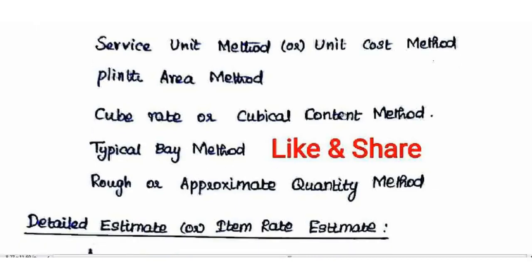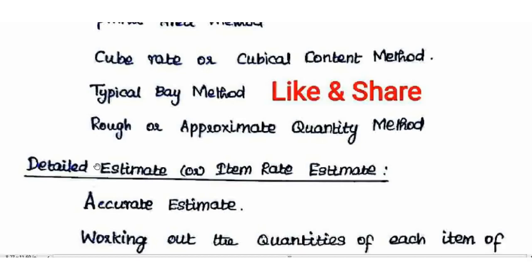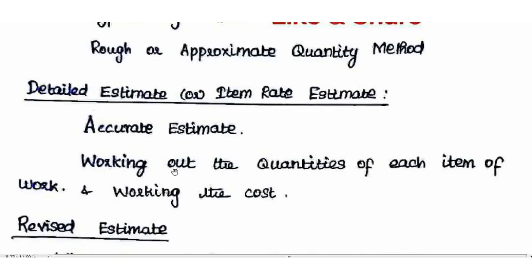Next is the Typical Bay Rate Method, used in industries. In this method the total length of walls — from foundation up to the parapet wall — is calculated and multiplied by the present rate. This is an approximate quantity method. Detailed Estimate or Item Rate Estimate is an accurate estimate where each item of quantities is calculated in detail.